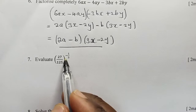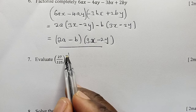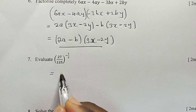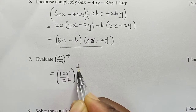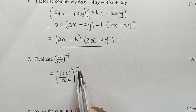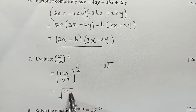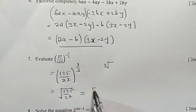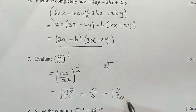Evaluate (27/125) to the power negative 1 over 3. When you have a negative power, you reciprocate: it becomes (125/27) to the power 1 over 3. A fraction power of 1 over 3 is the same as the cube root. The cube root of 125 is 5 and the cube root of 27 is 3, so the answer is 5 over 3, which is 1 and 2 over 3.